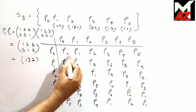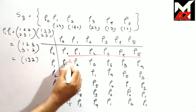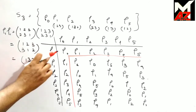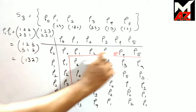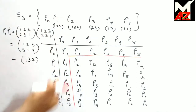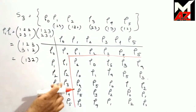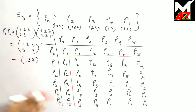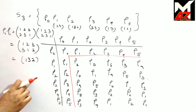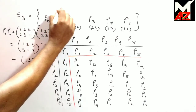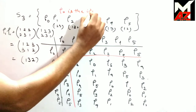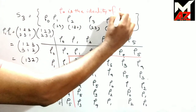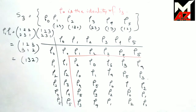Also, from the first row and the first column, all elements are the same as the top row and left column respectively. So we say that ρ0 is the identity element of S3.